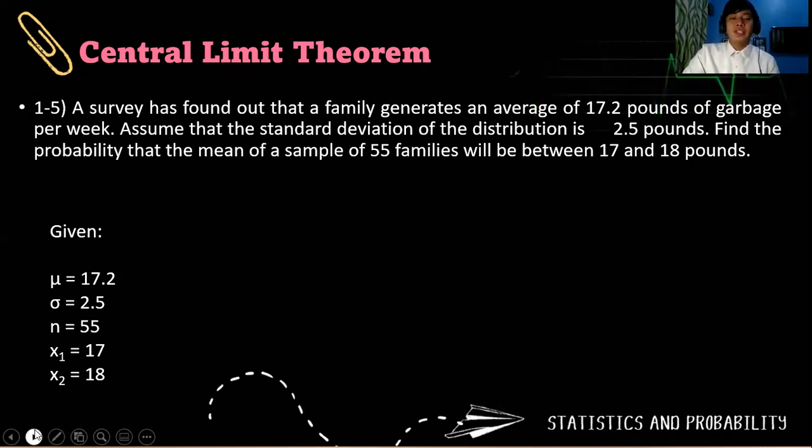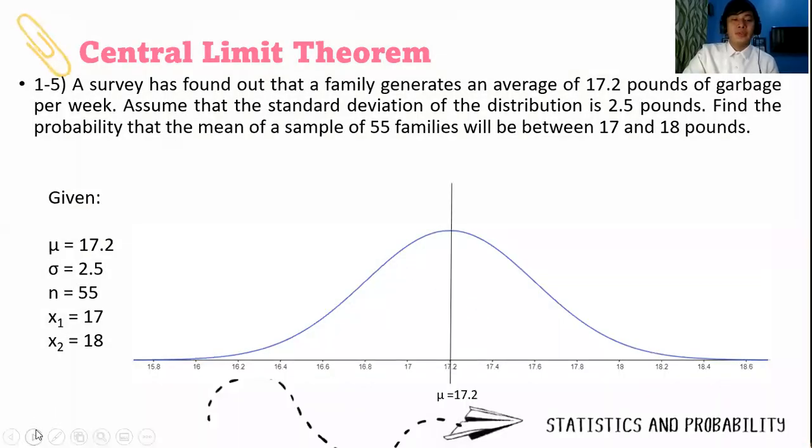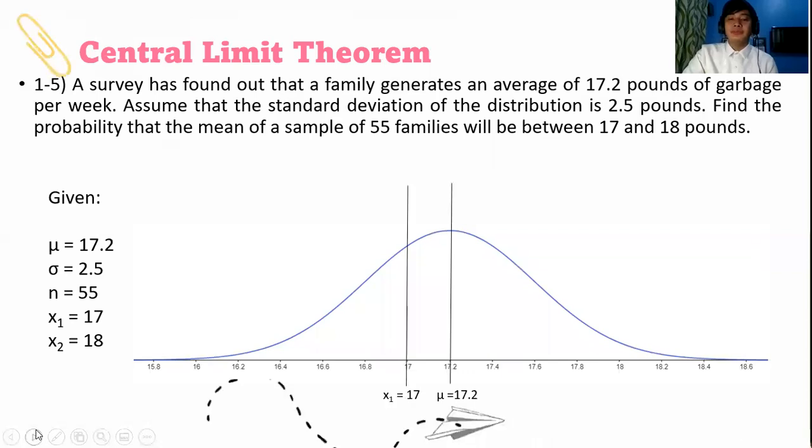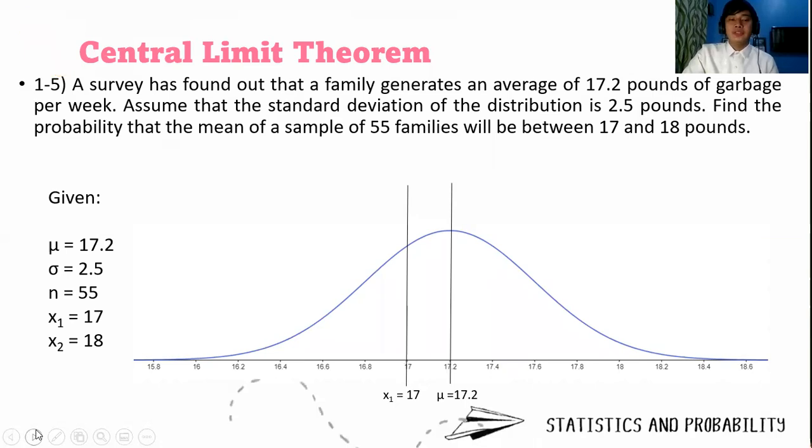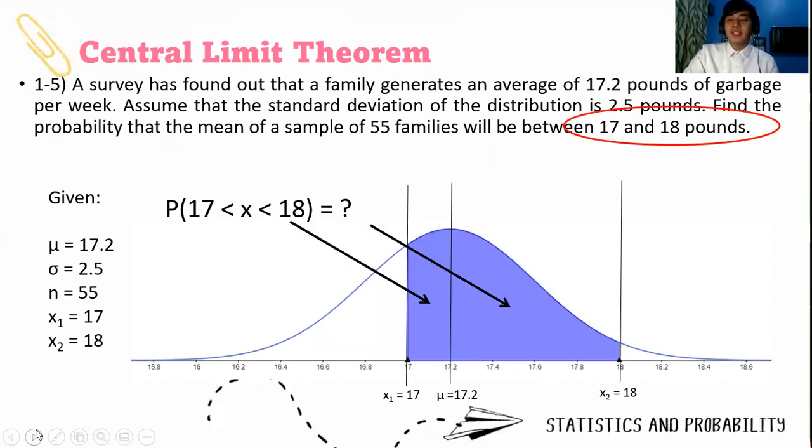When we plot it on the normal curve, this is how it looks like. We get the center, that is μ is 17.2. Our first vertical line is 17 and our second vertical line is 18. Notice that we will shade those parts. Obviously, the operation there will be addition.